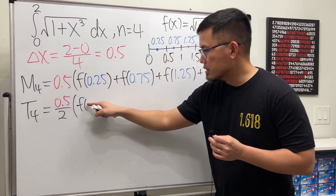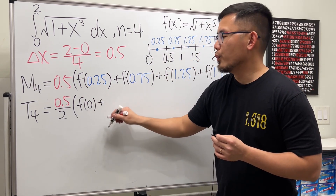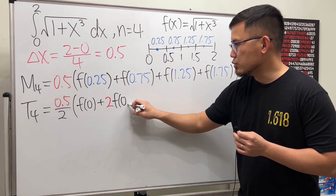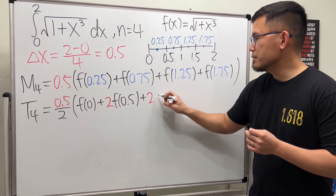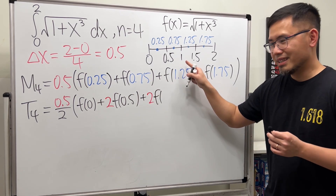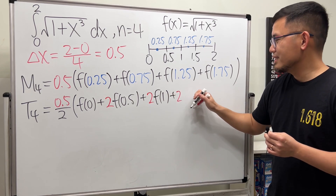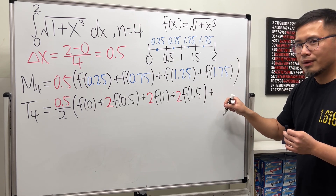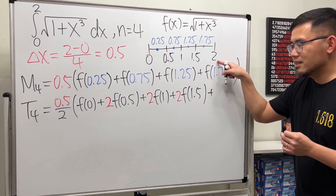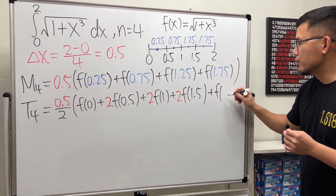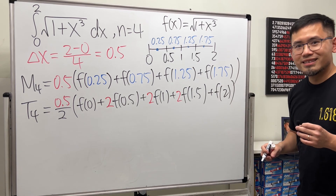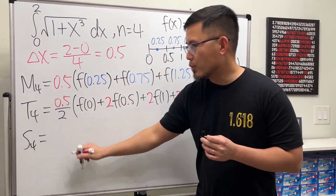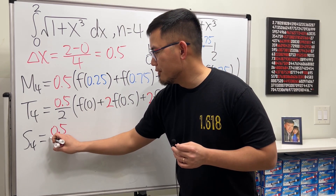So for T4 we have: 1·f(0) + 2·f(0.5) + 2·f(1) + 2·f(1.5) + 1·f(2). The last coefficient is 1 because it's the last x-value. And that's done.